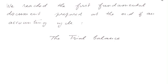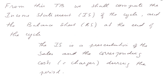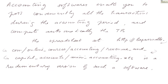Revenue accounts and capital accounts in the trial balance. We reach the first fundamental document prepared at the end of an accounting cycle: the trial balance. From this trial balance we shall compute the income statement of the cycle and the balance sheet at the end of the cycle. The income statement is a presentation of the sales and the corresponding costs, also called charges or consumptions, during the period. Accounting software enables you to post conveniently all the transactions during the accounting period and compute automatically the trial balance.